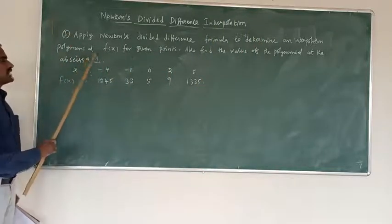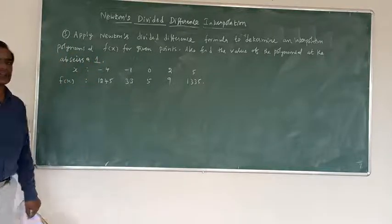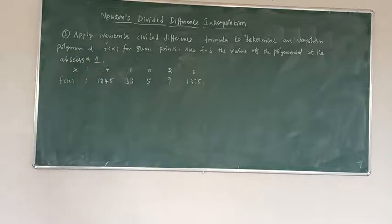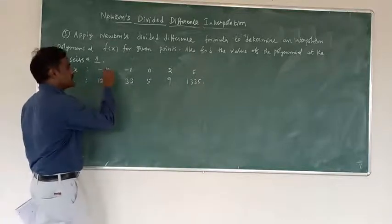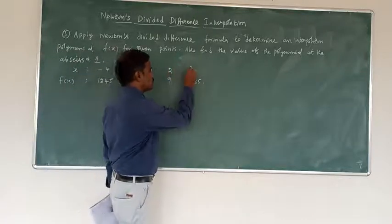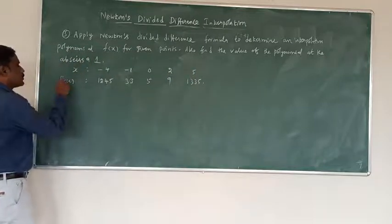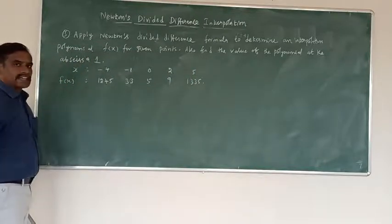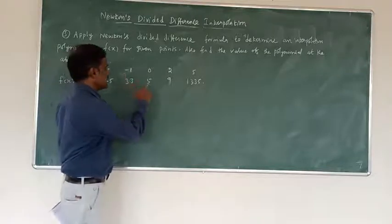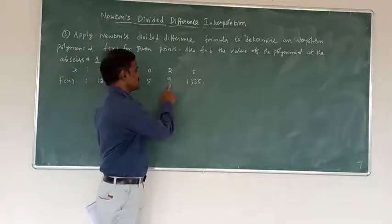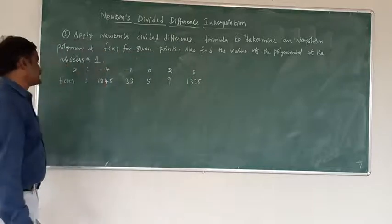We have to find out the value at x equals 1 — what is the corresponding y value? The x values are: minus 4, minus 1, 0, 2, 5. The corresponding y values, f(x), are: 1245, 33, 5, 9, and 1335.